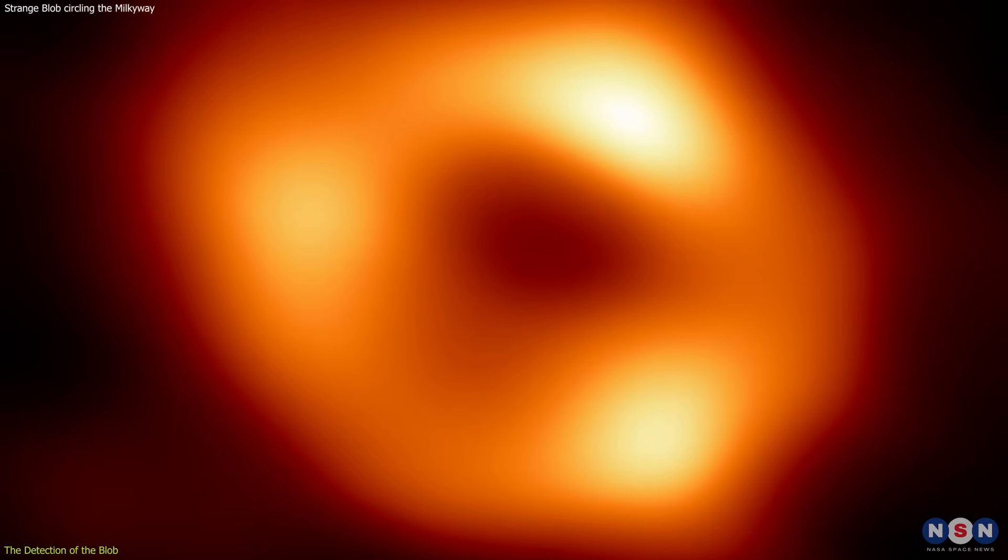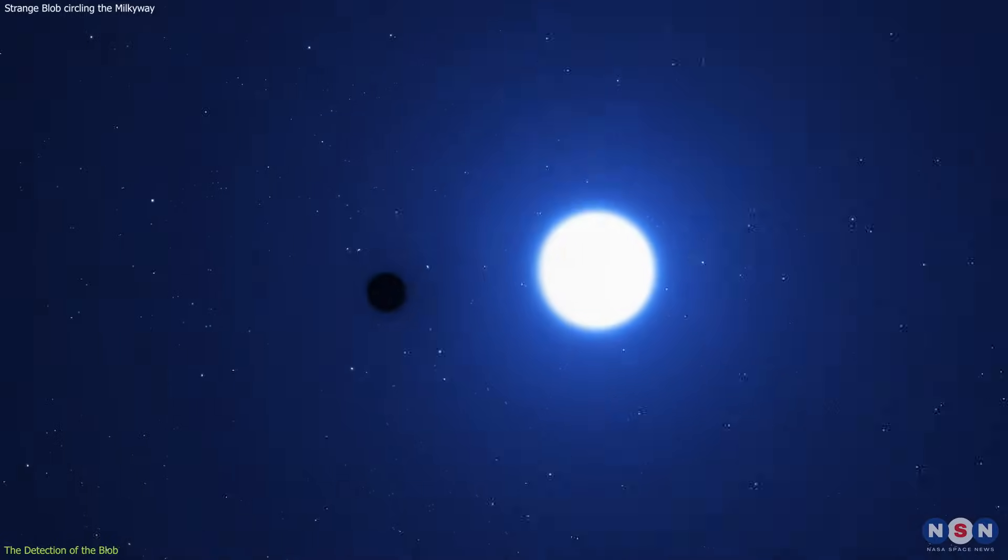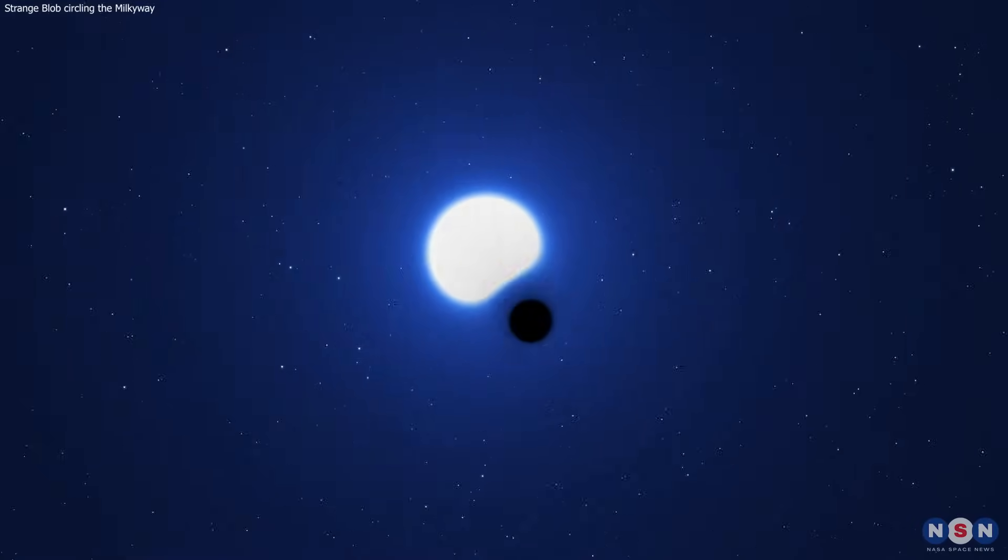So the gamma rays must be coming from something else in the vicinity of the black hole, something that is orbiting around it and interacting with it. But what could it be?